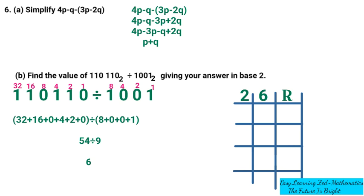Starting the repeated division: 2 goes into 6 three times, remainder 0. Write 2 down and bring 3 to the middle. 2 goes into 3 one time, remainder 1. Write 2 down and bring 1 to the middle. 2 cannot go into 1 as a whole number, so it goes 0 times, remainder 1. Since the middle value is now 0, the calculation has ended.